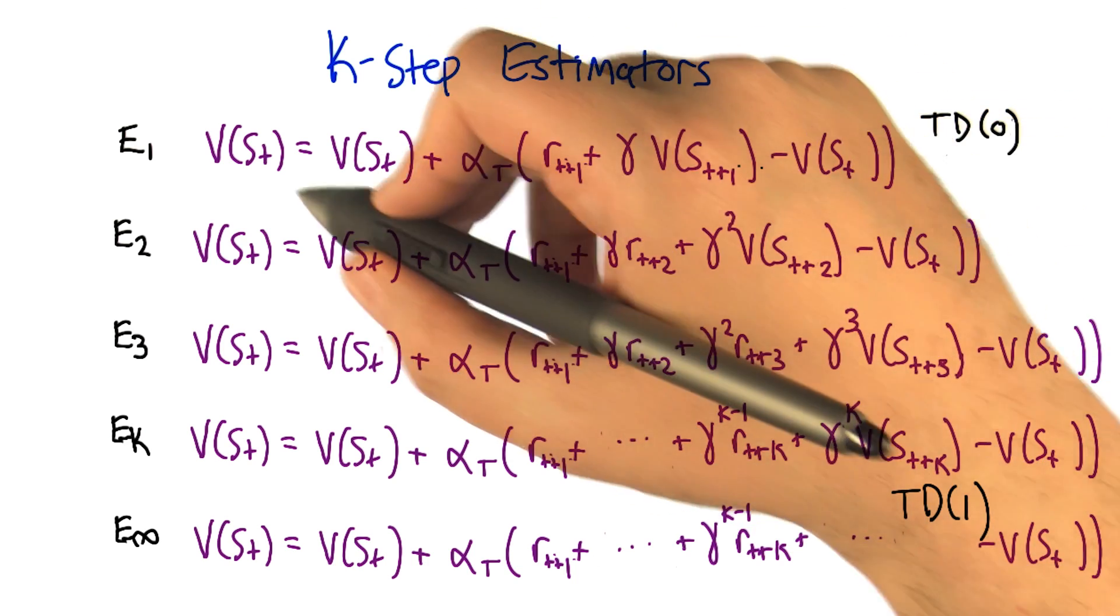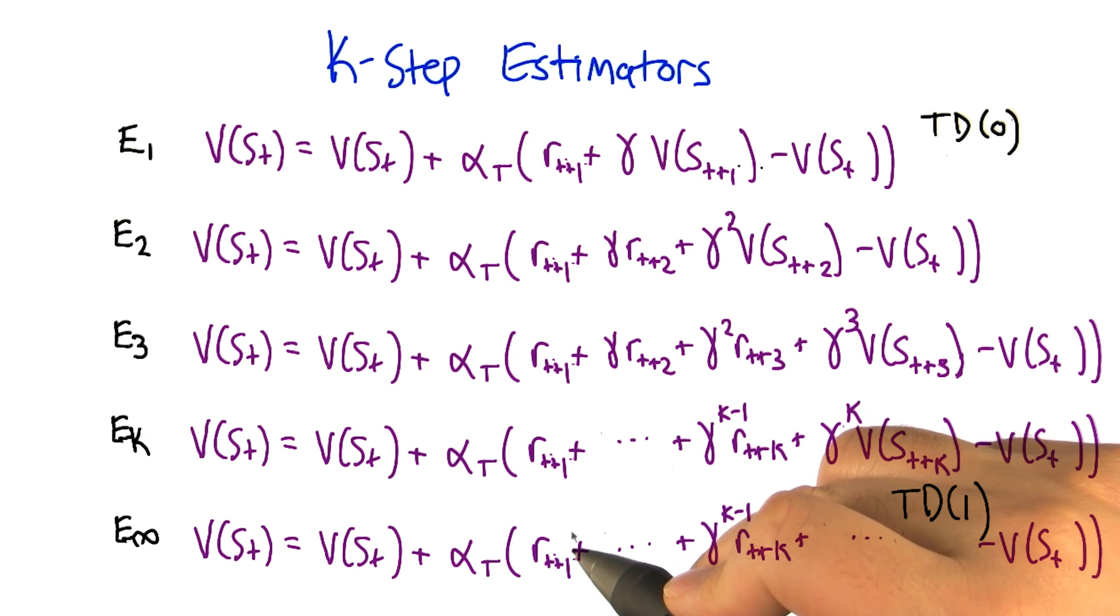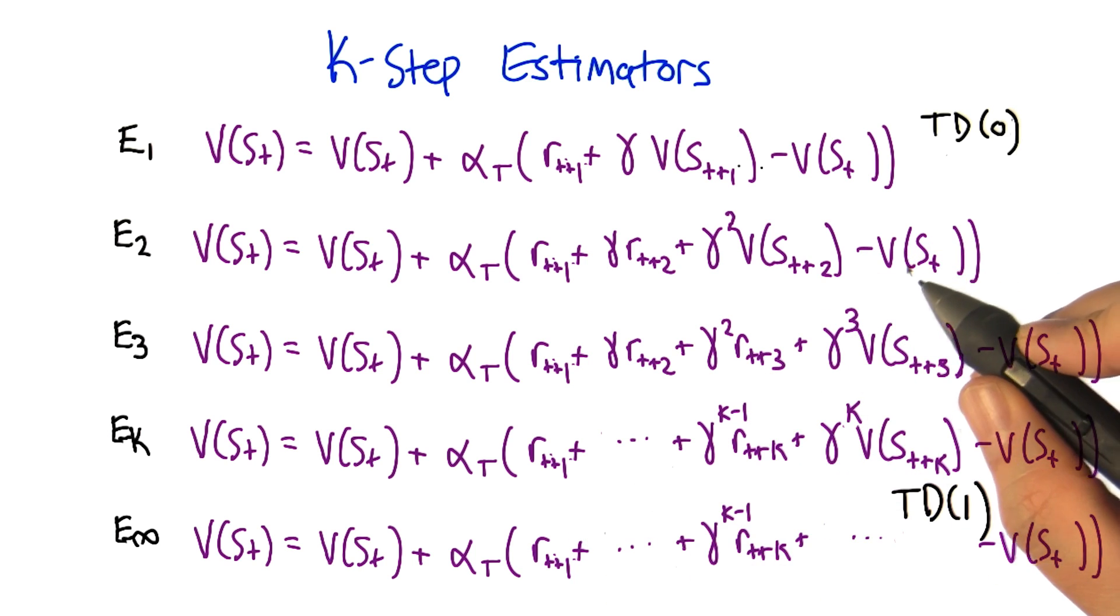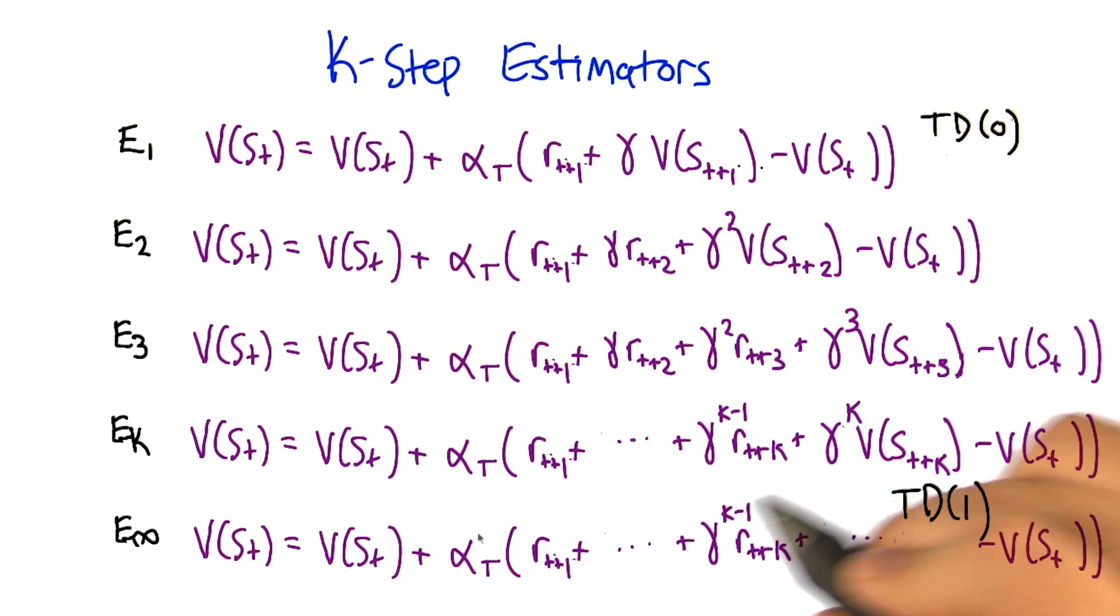So what I need to do next is actually relate these quantities to TD lambda, which we're going to show is a weighted combination of all these estimators. All infinity of them? All infinity of them. Oh, that's pretty impressive.